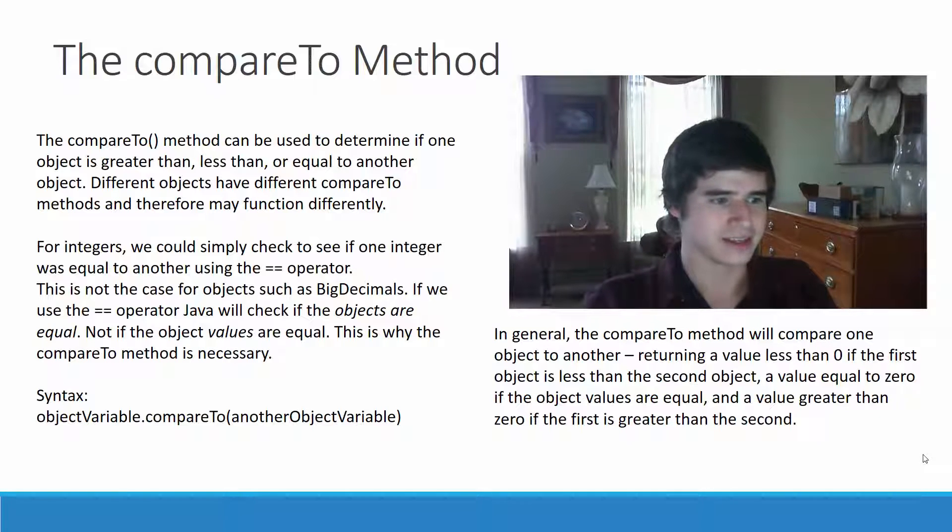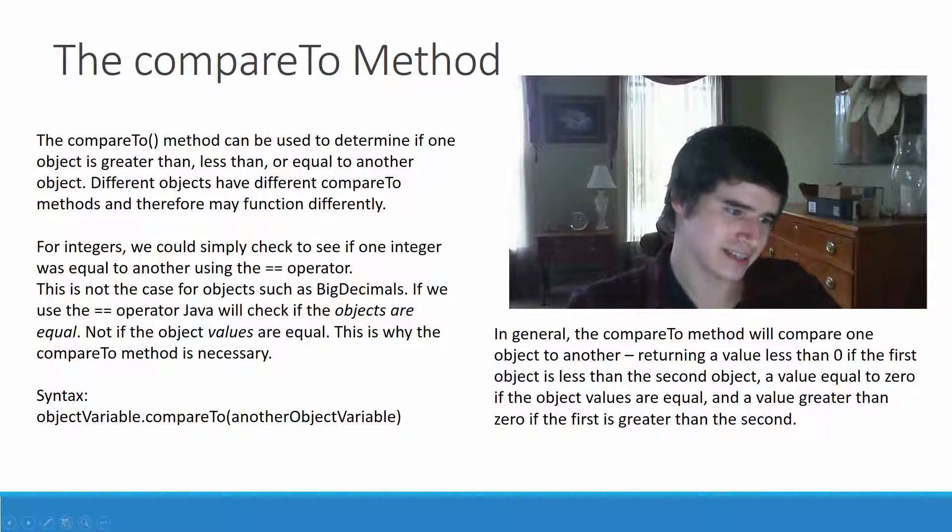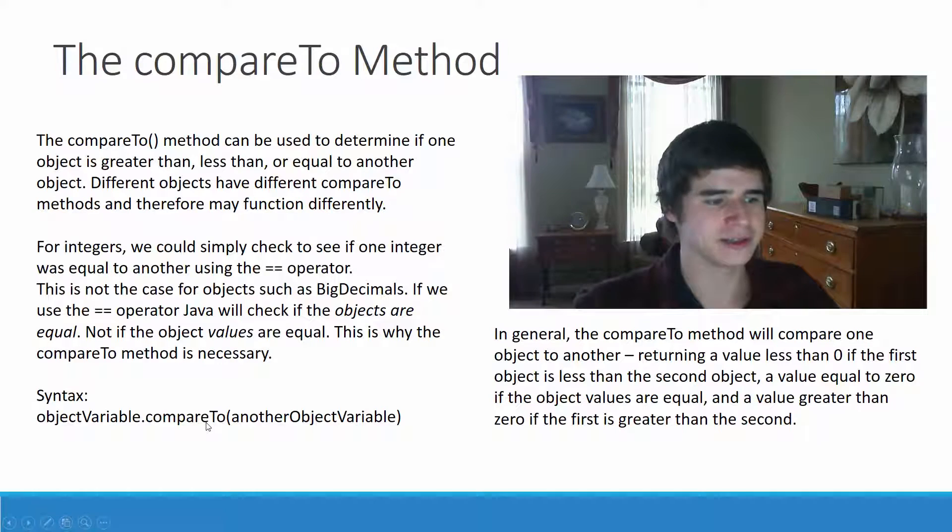So it says these objects aren't equal to each other because they're not the same thing. Now, if the object values are equal to each other, we have to use the CompareTo method. And the syntax for that is we have our first object variable, and we use .CompareTo, so the CompareTo method, and then there's some other object variable.